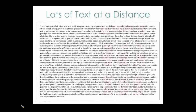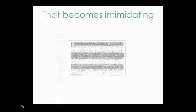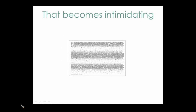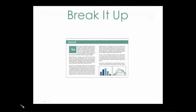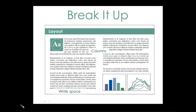Huge chunks of text that go on forever are visually overwhelming and intimidating to readers — it is hard to find your place when you are reading. Break it up. Create easy-to-digest sections. You can do this in different ways: splitting text boxes up with columns, adding a buffer of white space, and breaking up your text with visuals.